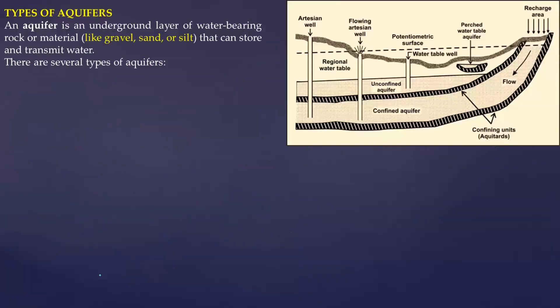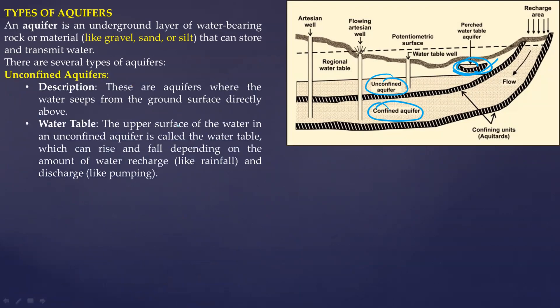Now look into types of aquifers. We have talked about this earlier as well. You have unconfined, confined, and there is something called perched which is like a base where you have this perched aquifer around the water table. What kind of material you're talking here? Gravel, sand, silt, which is bearing the water load. Unconfined is basically those aquifers where water seeps from ground surface directly above. Water table, the upper surface of the water in unconfined aquifer is called water table. When we say water table is depleting, this is what depletes here. Then we have to drill further hole.